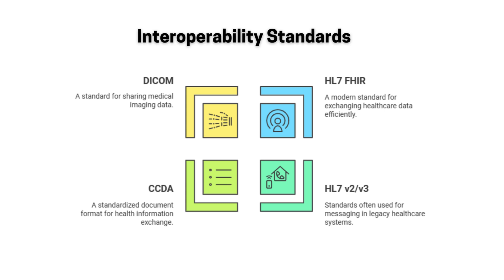HL7, health level seven, is kind of the granddaddy of them all — been around for a while. You've got different versions, V2 and V3, and they're still out there. But FHIR — fast healthcare interoperability resources — is the new kid on the block. It's built on modern web standards, so it's much easier to implement and much more flexible. It uses RESTful APIs and is really designed for data exchange in a way that older versions of HL7 weren't. It's really purpose-built for what we're trying to do here.